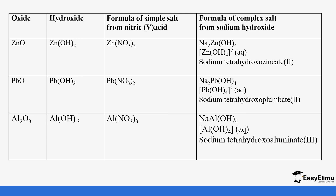Zinc oxide and hydroxide both react with acid to form zinc nitrate, and they also react with sodium hydroxide to form the same complex. Lead oxide also reacts with acid to form lead nitrate, and reacts with sodium hydroxide to form the complex. For aluminum oxide and hydroxide, they react with acid to form aluminum nitrate, and the complex is also formed. Note that the complex for aluminum is slightly different due to charge balancing.